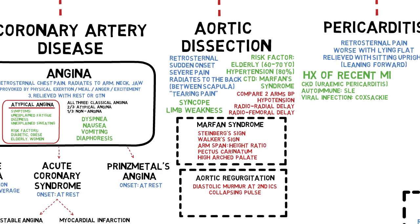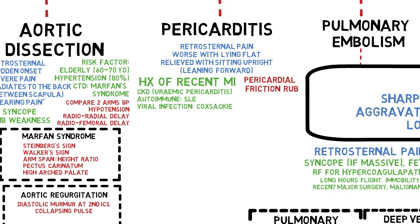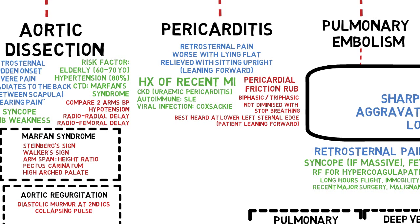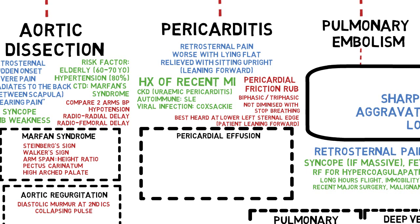The only specific sign for pericarditis is pericardial friction rub, though admittedly this is very difficult to appreciate. It is described as either biphasic or triphasic sound occurring with each heartbeat. To differentiate it from pleural rub, if you ask the patient to stop breathing, pericardial friction rub would not diminish because the heart continues to pump. But with pleural rub, the sound will stop because friction is due to movement of the lung. This is best heard at the lower left sternal edge when the patient is leaning forward. Pericarditis can lead to pericardial effusion, in which case the sound of the pericardial rub would diminish and heart sounds will be muffled by the effusion. A dullness below the angle of the scapula will be detected on percussion.